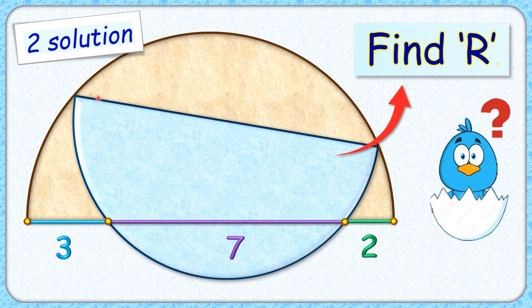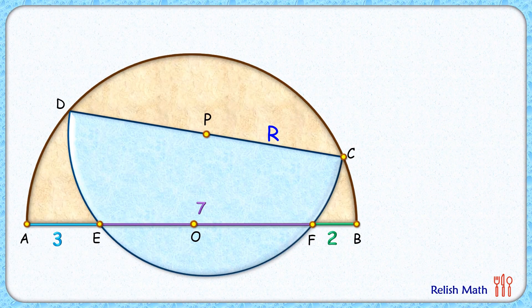Also the endpoints of the diameter of blue semi-circle lie on the circumference of brown semi-circle. The exciting part is with this limited data we have to find the radius of blue semi-circle. Let's check the solution.